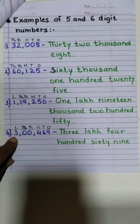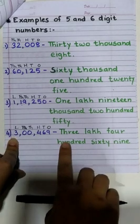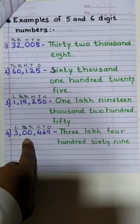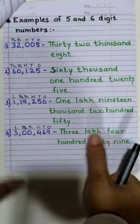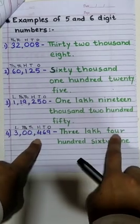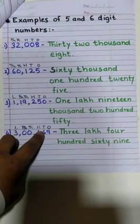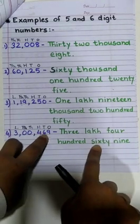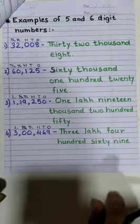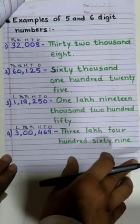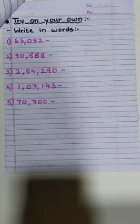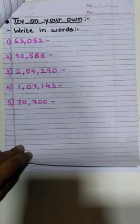Now let's have a look at the last one. Under lakhs column we have 3, because of which I have written 3 lakh. Under thousands column we have 00, so nothing for thousands. Under hundreds column I have written 400. Tens column we have 60, and for ones I have written 9, which makes it 3,00,469. Easy, right? So now I think you can try on your own. All the best.